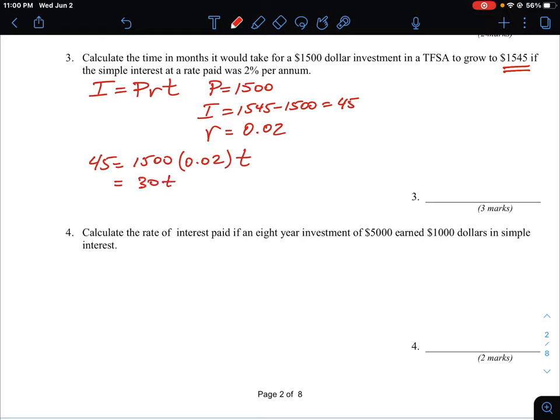That's $30, and then $45 is our interest. And then just like the previous question, we're going to divide by 30 on both sides. And we're going to solve for T. So T here is going to be 45 over 30.